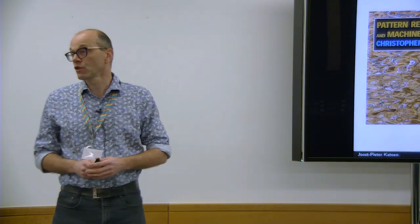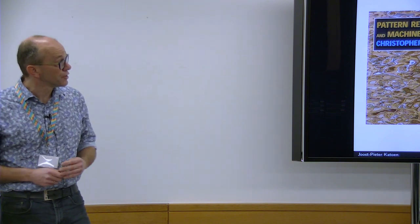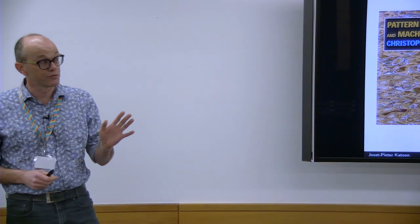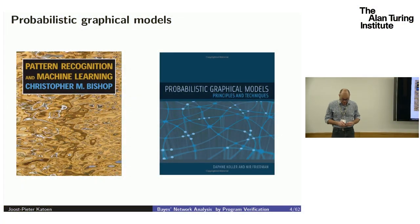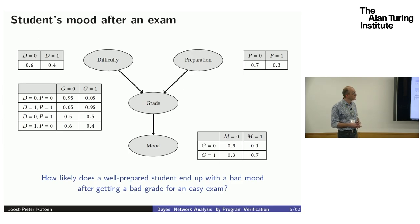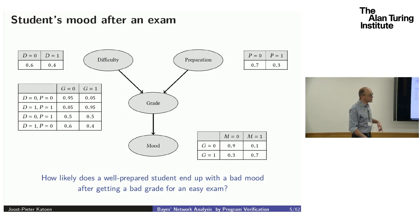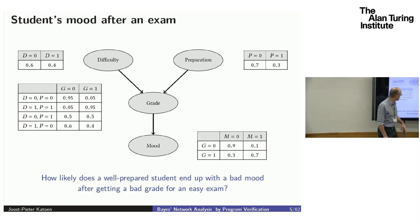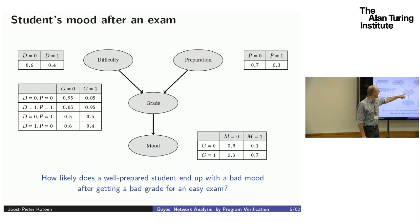The type of models I'm going to use is a very simple version of probabilistic graphical models — specifically Bayes networks. The example is the student's mood after taking an exam. There are four random variables: the difficulty of the exam, the preparation level of the student, the grade the student gets depending on difficulty and preparation level, and then the mood of the student after receiving the result.